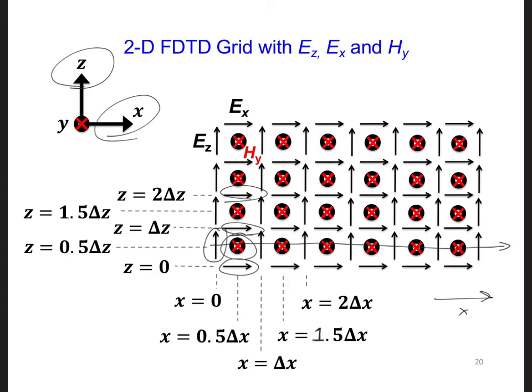To develop update equations for field components in a two-dimensional grid, we can start from Ampere's and Faraday's laws, just as we did for the 1D grid. First, let's consider Ampere's law for free space. The current density j is going to be equal to zero, and we'll have the curl of H equals epsilon dE/dt.